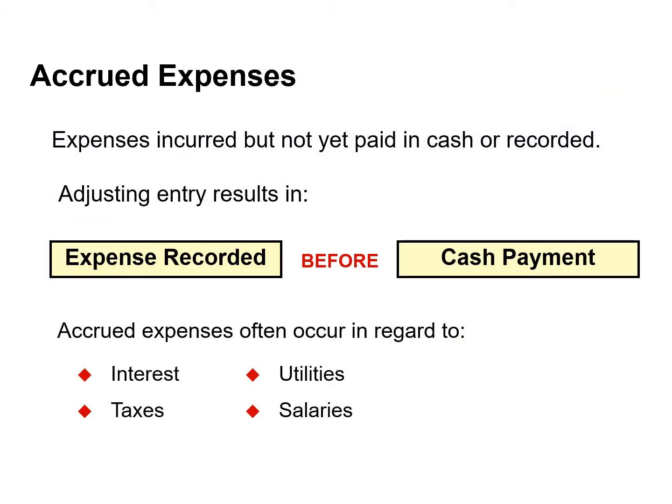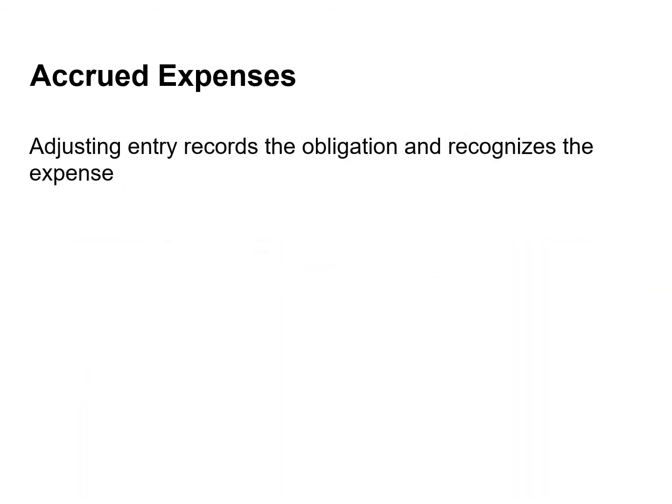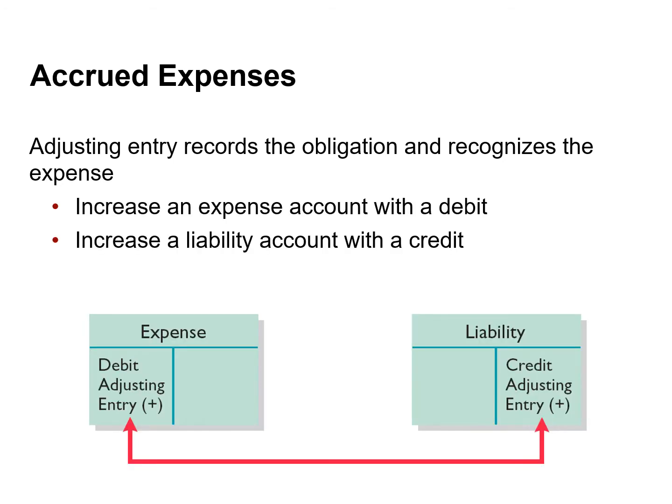Expenses incurred but not yet paid or recorded at the statement date are called accrued expenses. Interest, taxes, utility, and salaries are common examples. Companies make adjustments for accrued expenses to record the obligations that exist at the balance sheet date and to recognize the expenses incurred in the accounting period. An adjusting entry for accrued expenses results in an increase, or a debit, to an expense account and an increase, or a credit, to a liability account.